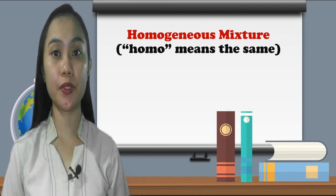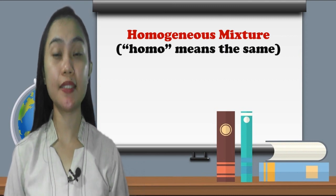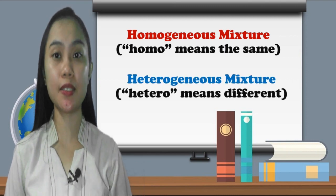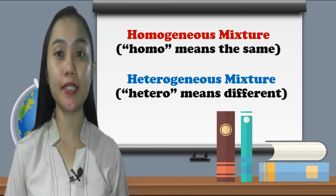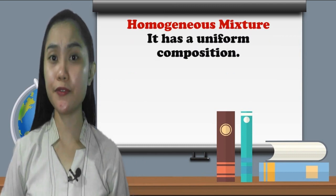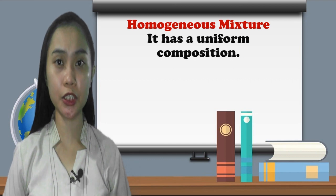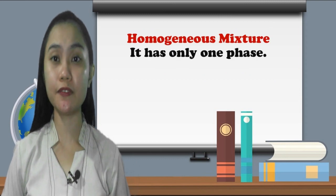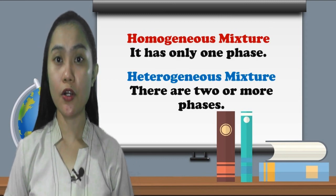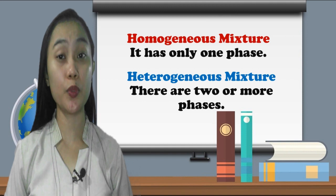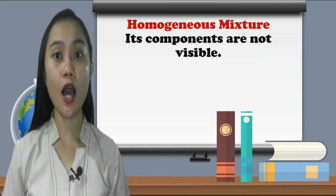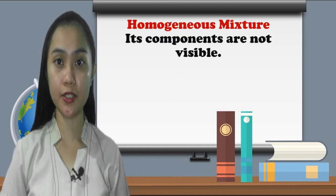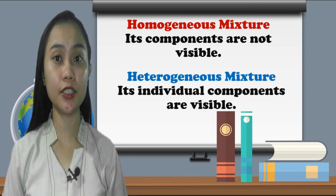Homogeneous — 'homo' means the same; heterogeneous — 'hetero' means different. Homogeneous mixtures have a uniform composition, while heterogeneous mixtures have a non-uniform composition. Homogeneous mixtures have only one phase, while heterogeneous mixtures have two or more phases. In homogeneous mixtures, components are not visible, while in heterogeneous mixtures they are visible.